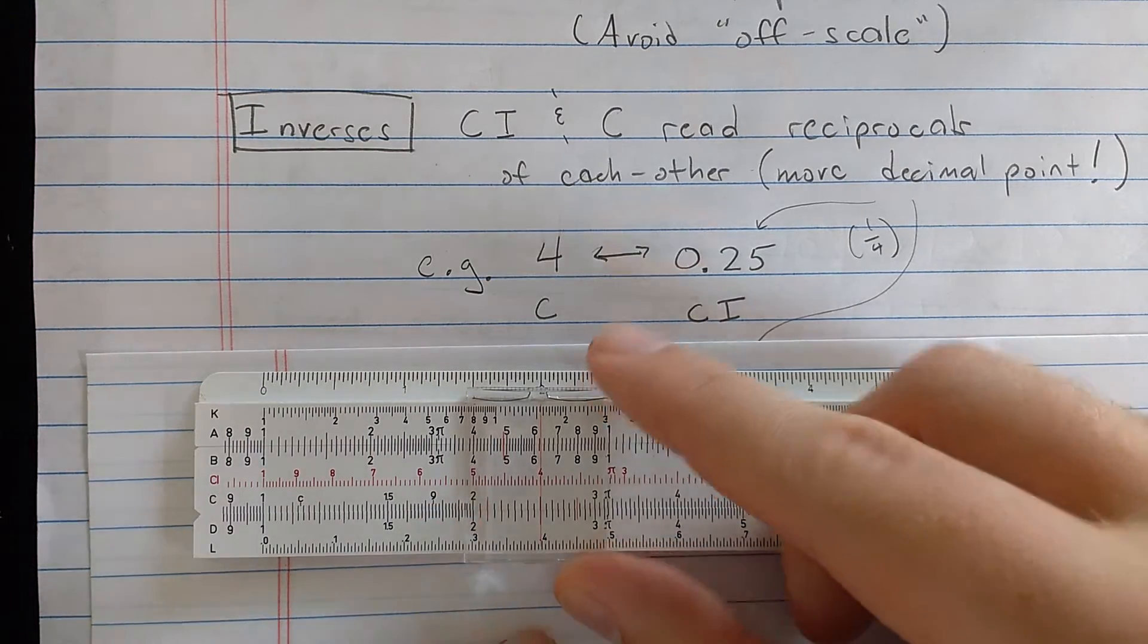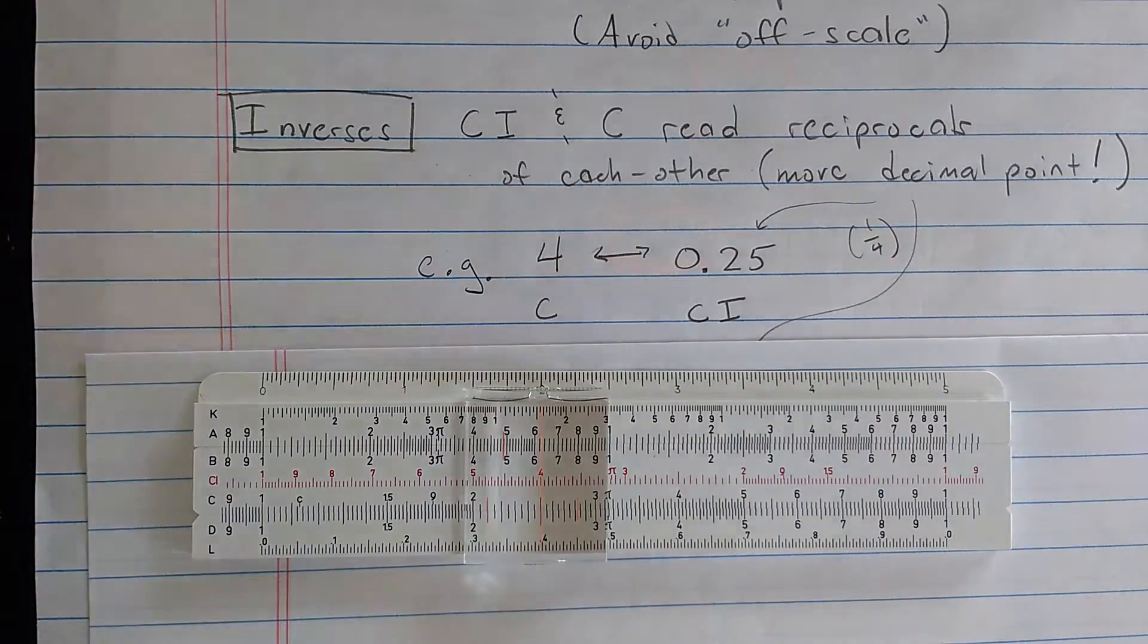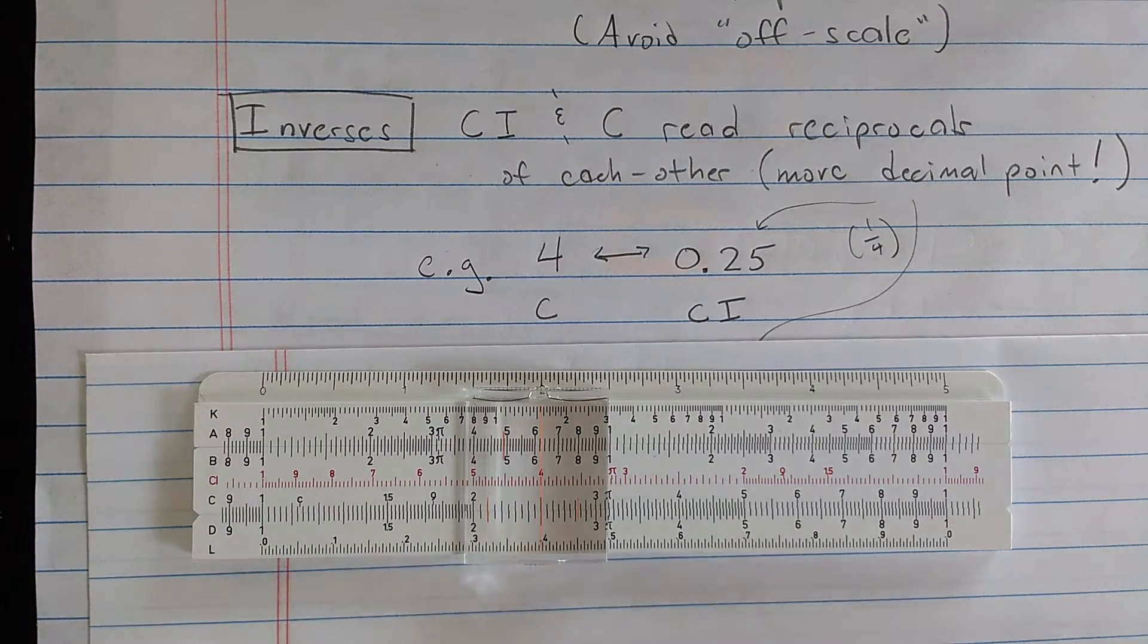you will also see 2.5 on the C scale. We know the reciprocal of the reciprocal is the original number, so it doesn't matter which scale you start with here.